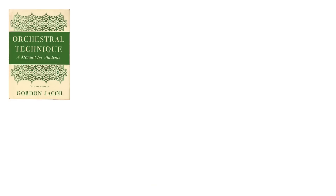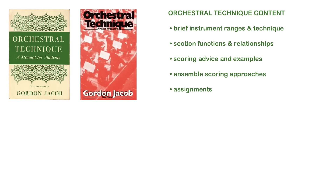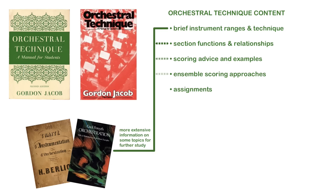Jacob's solution was ingenious, and the proof of this is in the longevity of his 1931 book, Orchestral Technique. It's survived several generations of university instruction, and is still published today by Oxford University Press. It's not a treatise, nor is it a self-contained university text. Rather, it's a curriculum. Subtitled A Manual for Students, it's more properly a series of notes and assignments around which an orchestration teacher can structure a course. This strategy treats books like Forsyth's Orchestration as secondary resources, the information from which is distilled to its most concise essence in each chapter of Jacob's book.